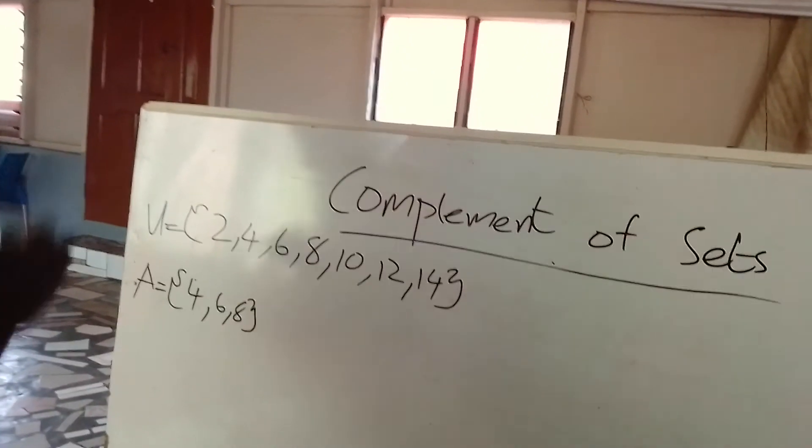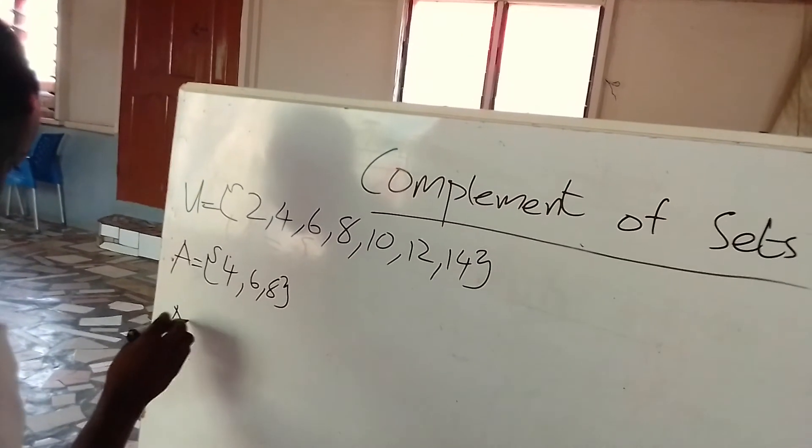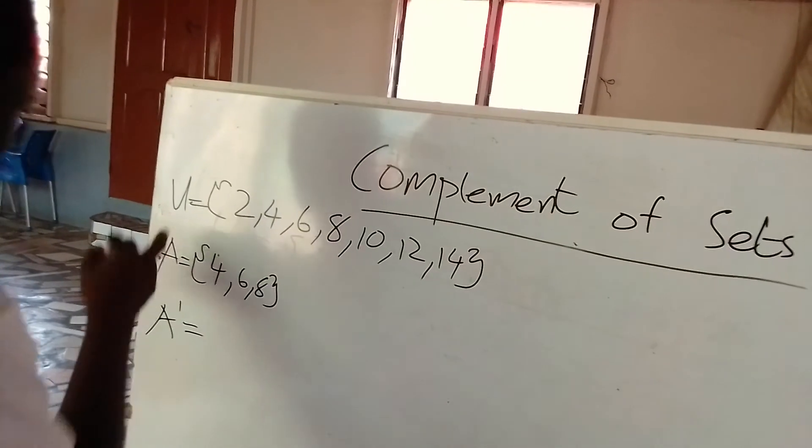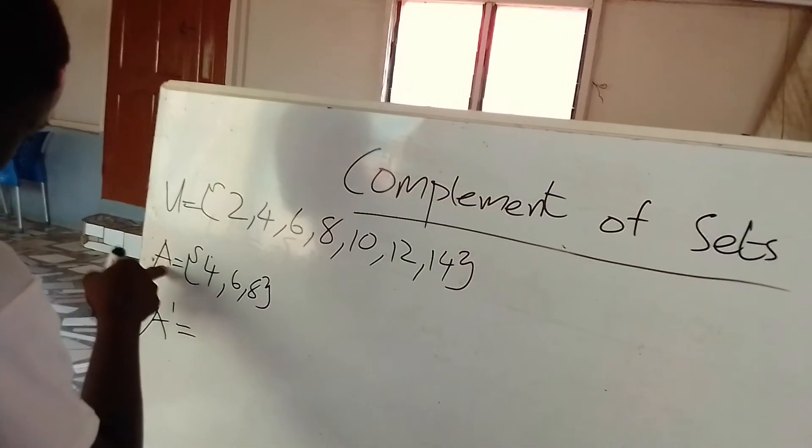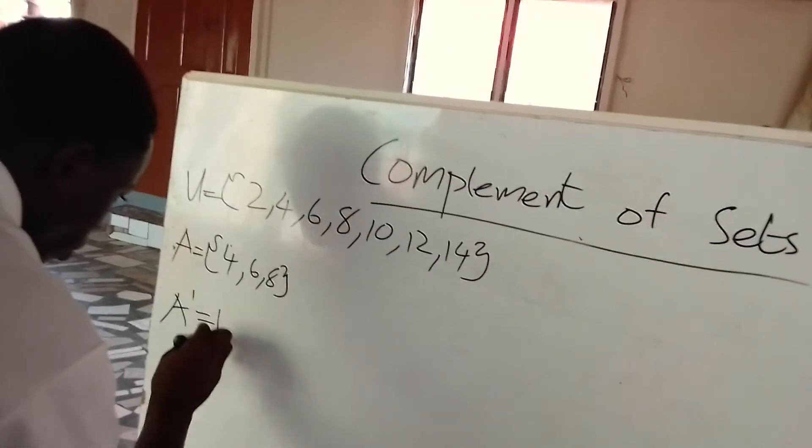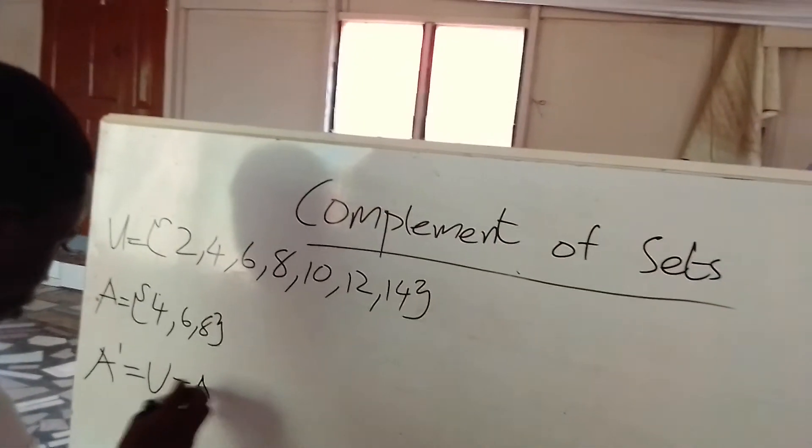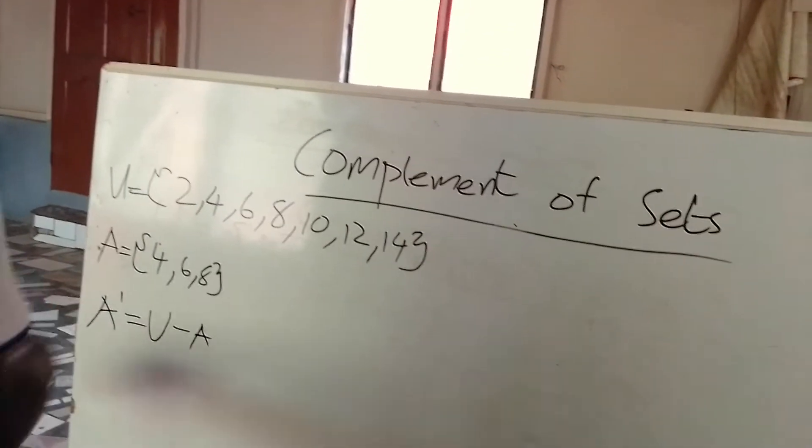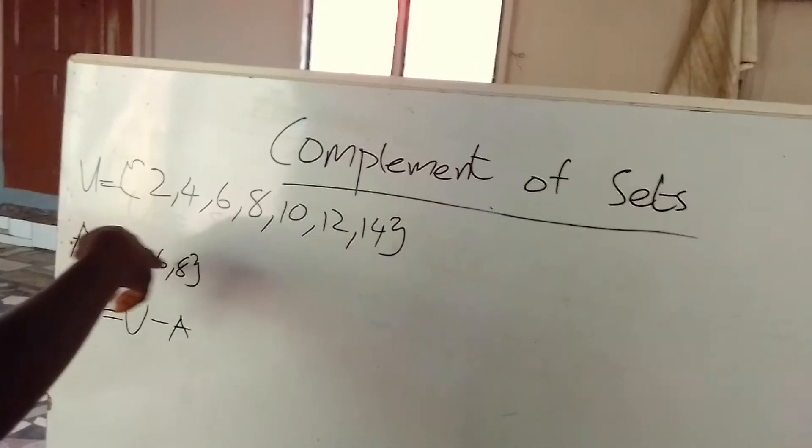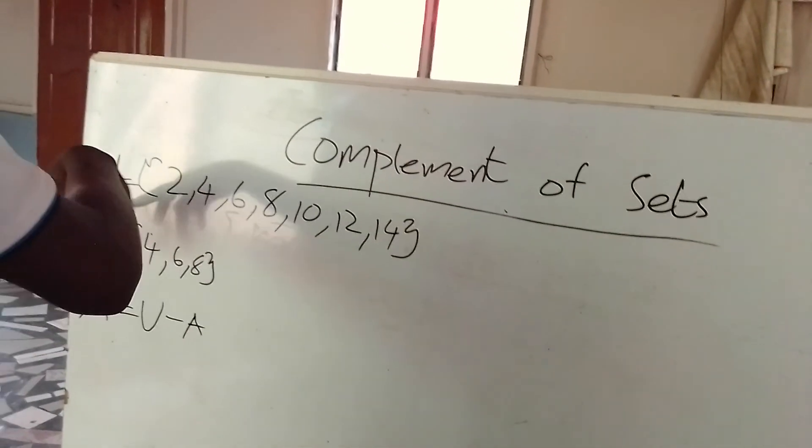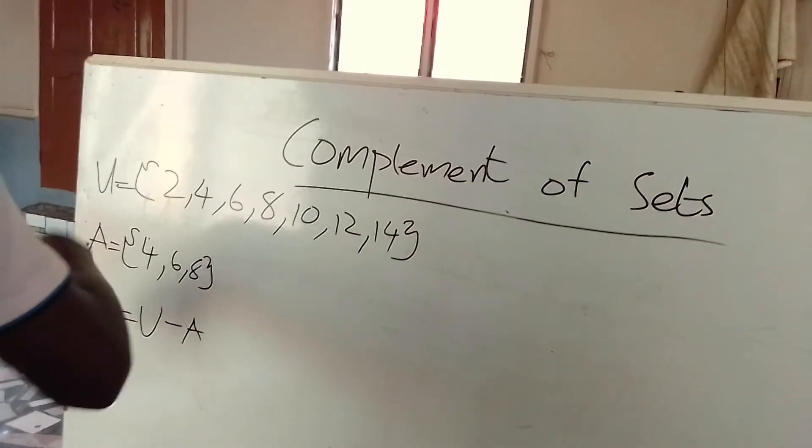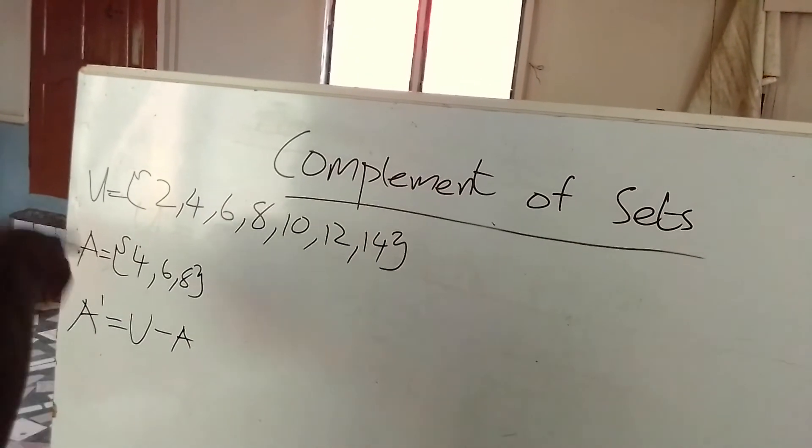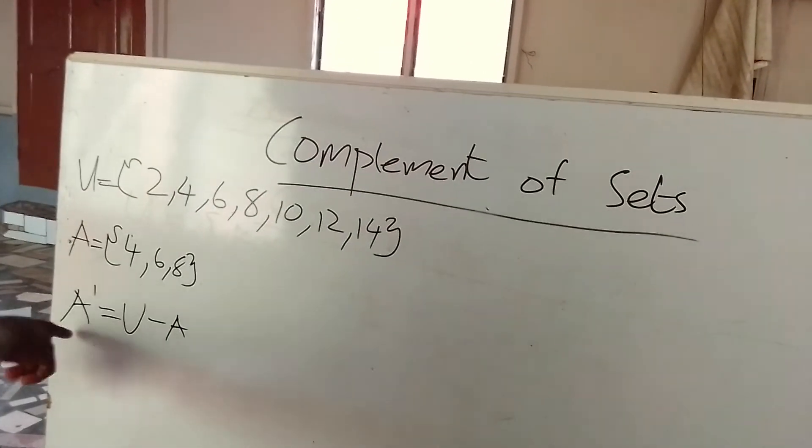And the formula is A complement equals the universal set minus the subset. Meaning, when you want to get a complement set for A, you cancel the members of A from the universal set too, in order to obtain the complement set of A here.